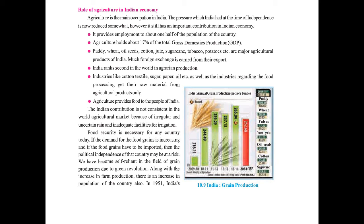India ranks second in the world in agricultural production. Industries like cotton textile, sugar, paper, and oil, as well as food processing industries, get their raw material from agricultural products. However, India's contribution is not consistent in the world agricultural market due to irregular and uncertain rainfall and inadequate irrigation facilities. Food security is necessary for any country today. If food grain demand increases and grains have to be imported, the political independence of that country may be at risk. We have become self-reliant in grain production due to the Green Revolution.